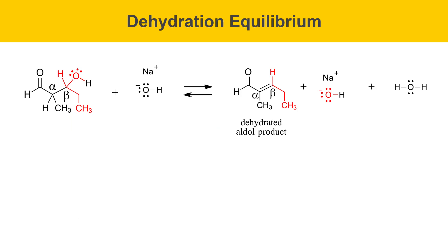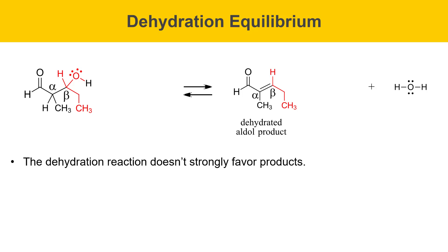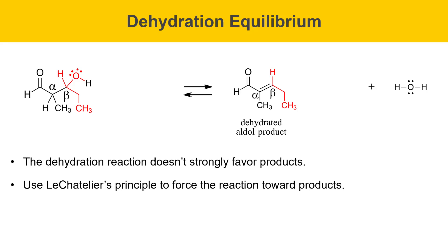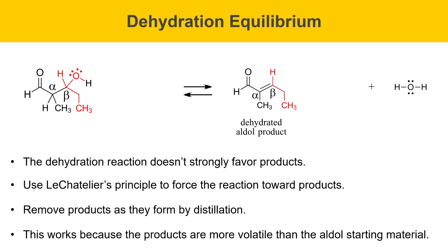This slide talks about the dehydration equilibrium. You might worry about hydroxide functioning as a leaving group — usually hydroxide is a poor leaving group because it's a strong base, and that is true. However, in this reaction hydroxide is both a starting material and a product, so these cancel out and don't figure into the reaction equilibrium. The dehydration reaction also doesn't strongly favor products, meaning we get a mixture of aldol product and dehydrated aldol product. To get good yield of the dehydrated product, we need to use Le Chatelier's principle to force the reaction forward by removing products as they form using distillation, since the products are more volatile than the aldol starting materials.